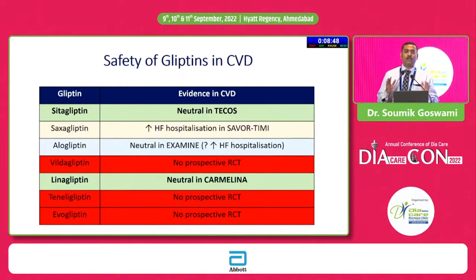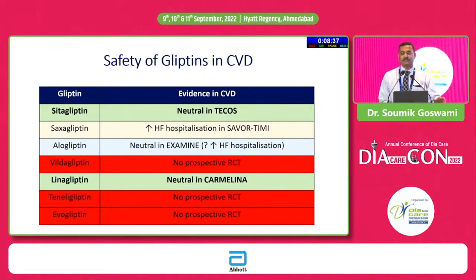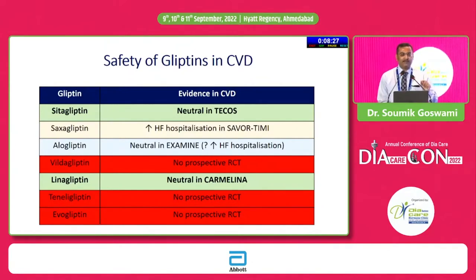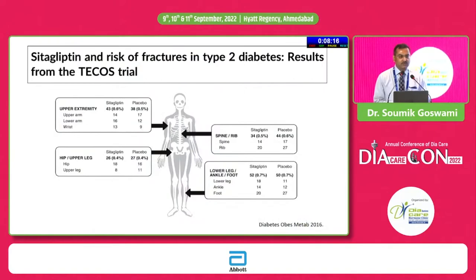Regarding overall cardiac safety, there has been a lot of debate about whether cardiovascular outcome trials are necessary. But if you have cardiovascular safety proven from a cardiovascular outcome trial, it is always an additional bonus. In this respect, the two molecules that stand out are Sitagliptin and Linagliptin. With Teneligliptin and Vildagliptin, we have no such prospective RCT. With Saxagliptin and Alogliptin, we have some data, but there are still safety concerns with use of those agents.